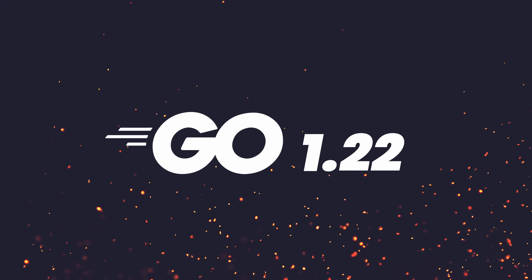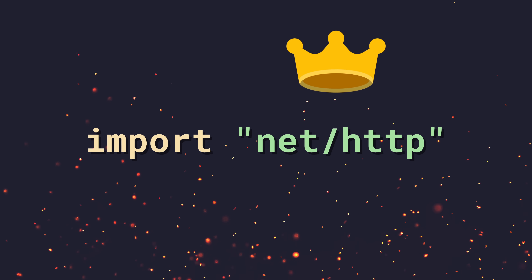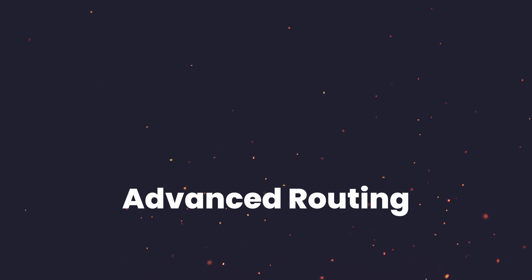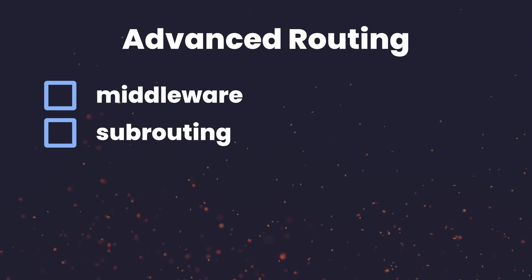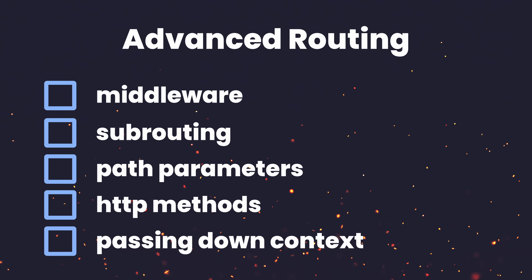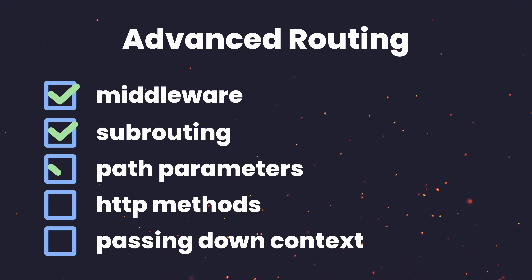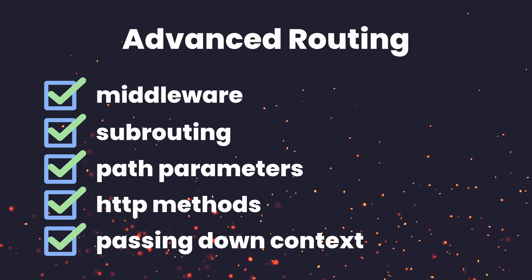Since Go 1.22 was released, the net/http package is now all you need. But knowing how to use the HTTP ServeMux type can be rather elusive, especially for advanced features such as middleware, subrouting, path parameters, HTTP methods, and passing through context. In this video we're going to look at how to implement each of these using only the Go standard library.